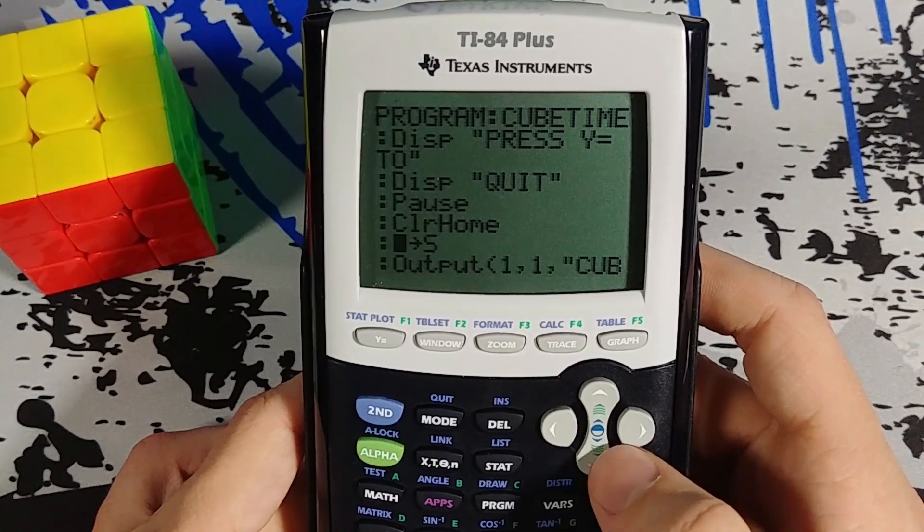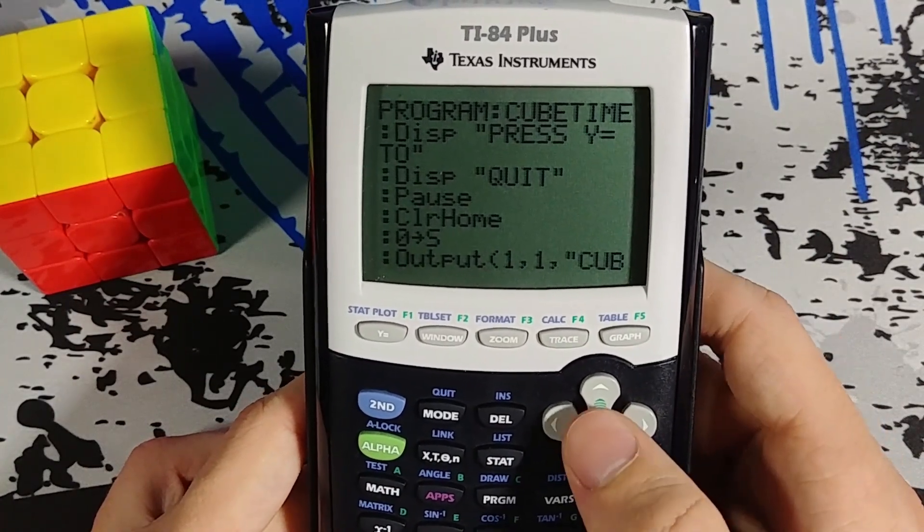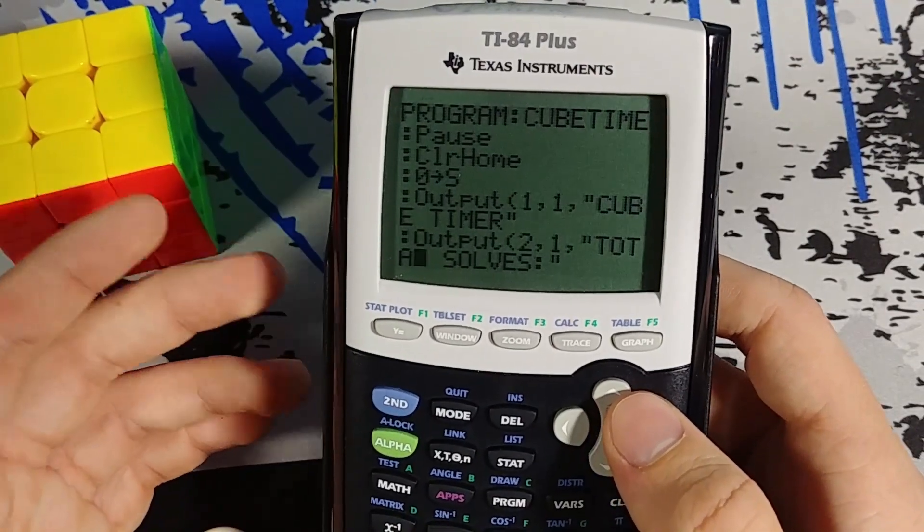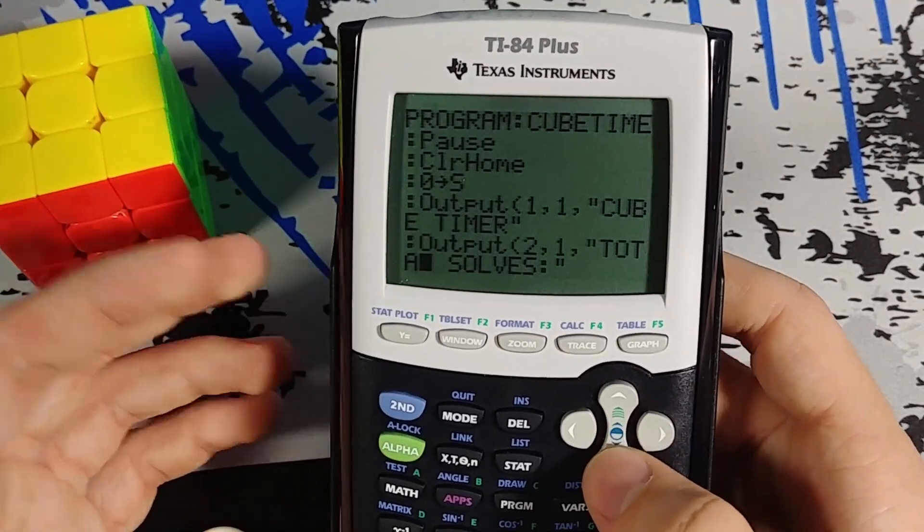Now I'm storing zero into s. Because s is actually my number of solves completed. So of course if I have empty list 6, I also want s to be equal to zero.